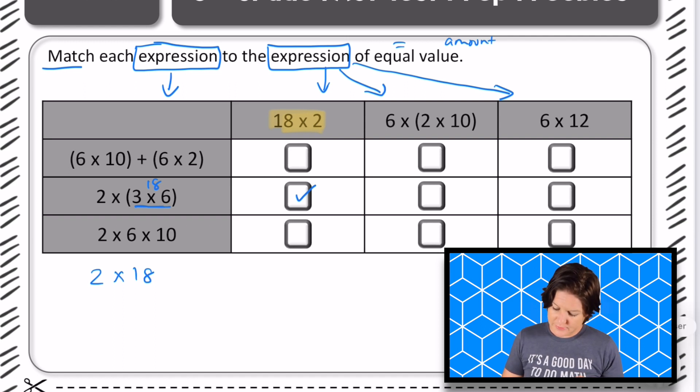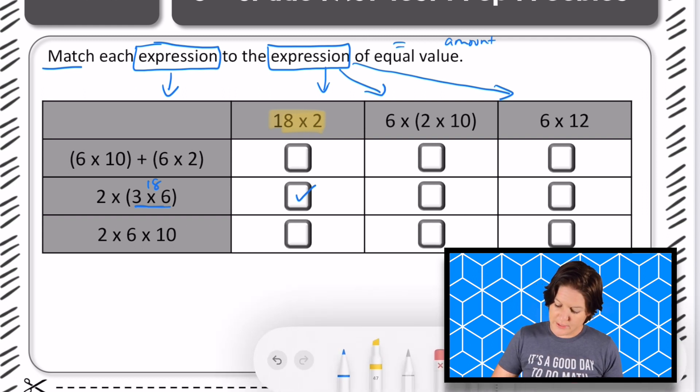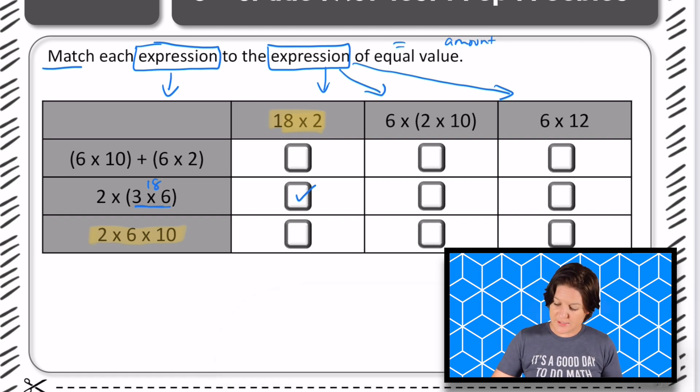Now my brain is kind of gravitating towards this one right here because I see two, six, and ten. Those are three factors that are being multiplied. 2 x 6 x 10. And up here I'm seeing 6 x (2 x 10).